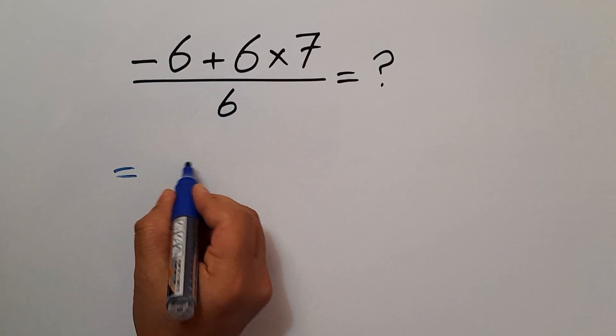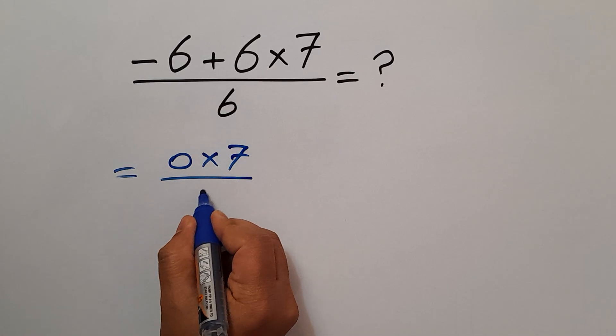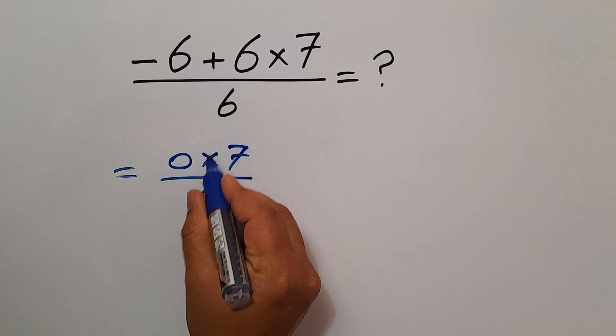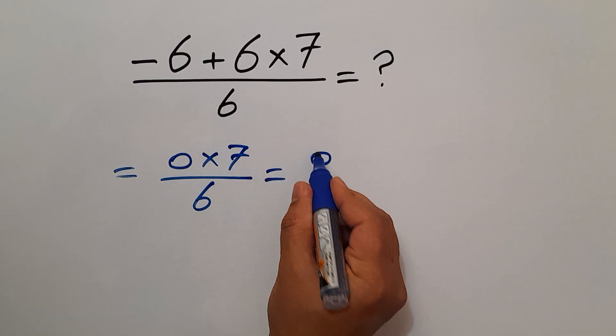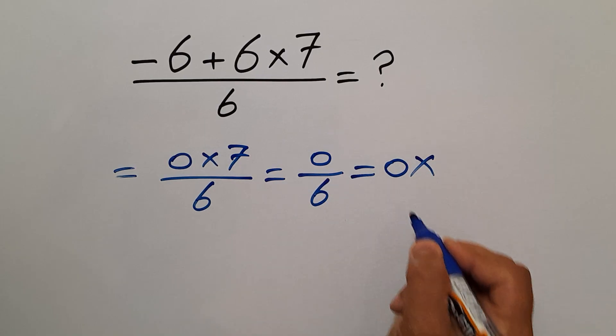6 gives us 0, and 0 times 7 over 6... 0 times any number gives us just 0, and 0 divided by 6 equals 0. But this answer is not correct.